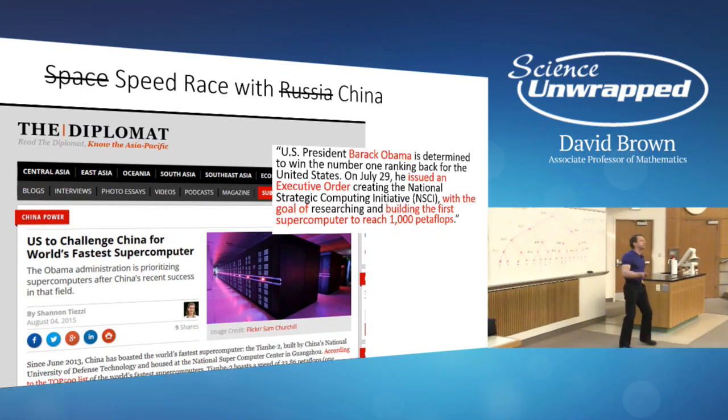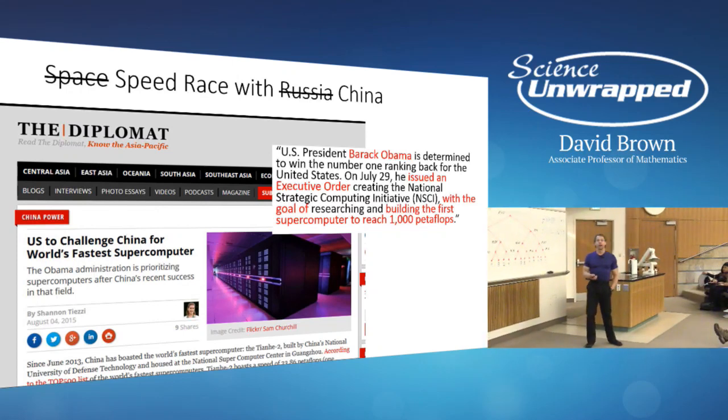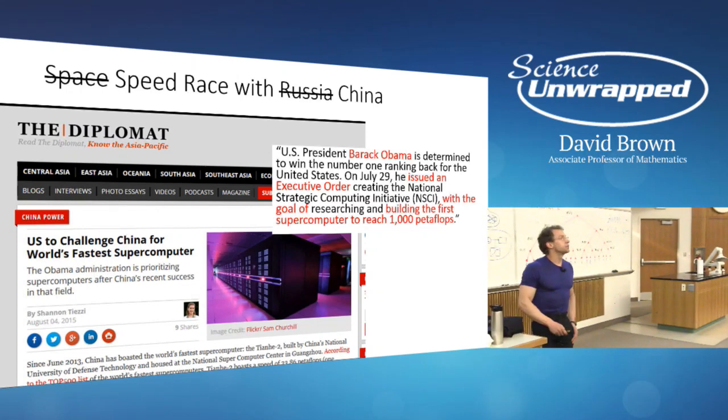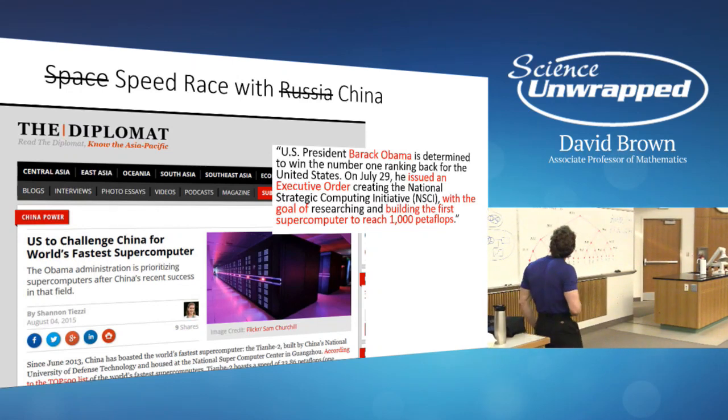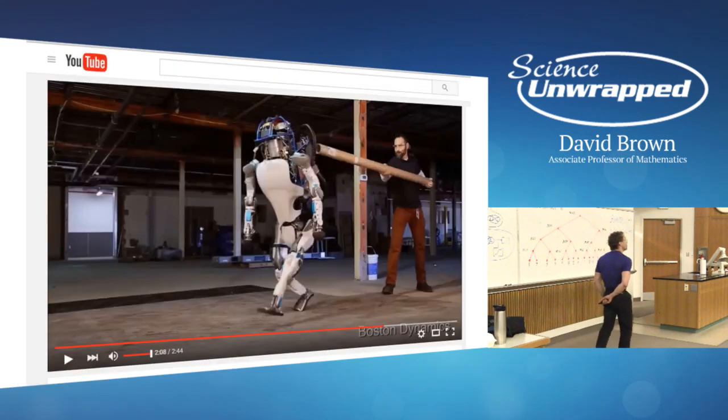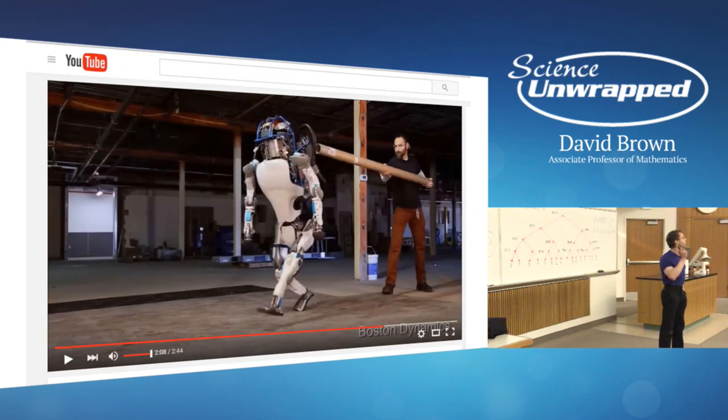In spite of this, we are not anymore in a space race with Russia, but a speed race with China. Barack Obama is insisting that we come up with the first supercomputer that can compute with the speed of 1,000 petaflops—that's 30 times the fastest computer that we have right now. And in spite of that, we got this jackass from Boston Dynamics that's teasing robots. Have you guys seen this?